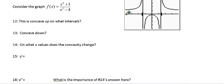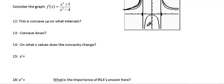So where does it concave up? Well, over here it's concave up. You put the region in this little area. It's concave up in these two regions, then concave down in the middle. So what does it concave down? Negative 2 to 2.